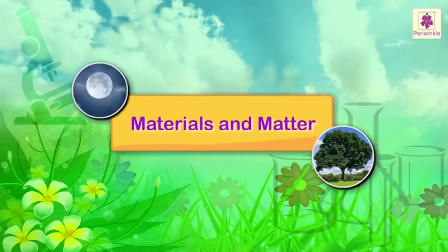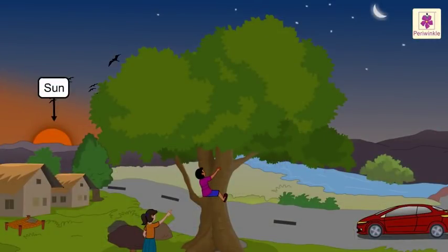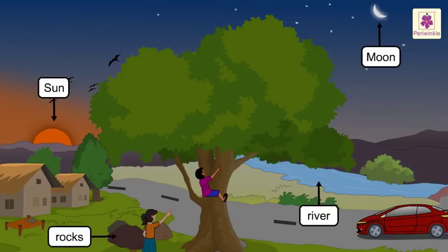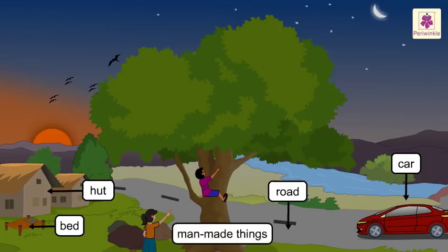Materials and matter — everything in this universe is made of something. The sun, moon, river, and rocks are all natural things; they are found in nature and are not made by man. The cart, car, bed, and road are made by man — they are man-made things that we make for our use.